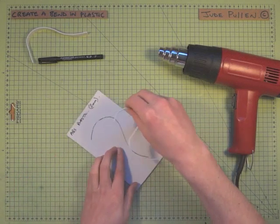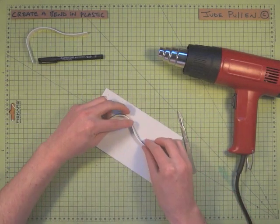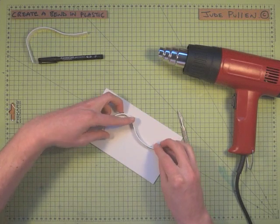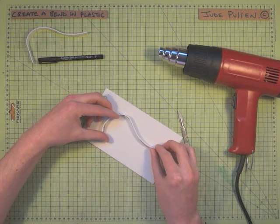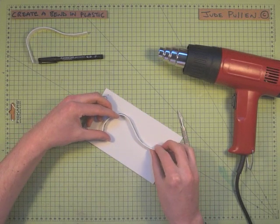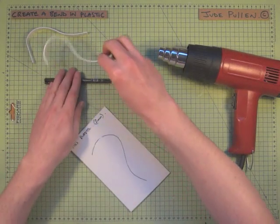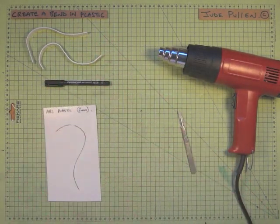You can see that with a little bit of encouragement we can get it to fix onto there as well, so you could glue that on however you like. So we've got two variations on how you'd make a bend in plastic.